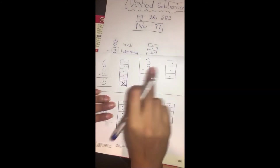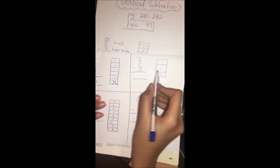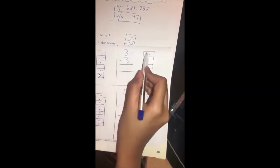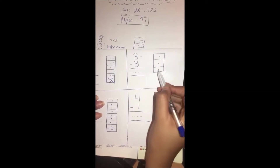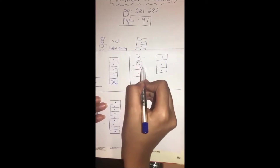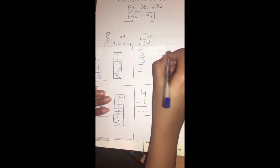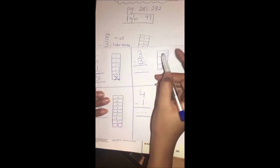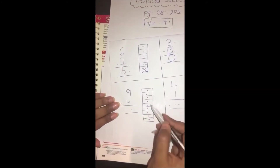This time, 3 minus 3. How many in all? Three. 1, 2, 3. How many are we going to take away? Three. 1, 2, 3. How many left? Is there anything left? No. So zero.